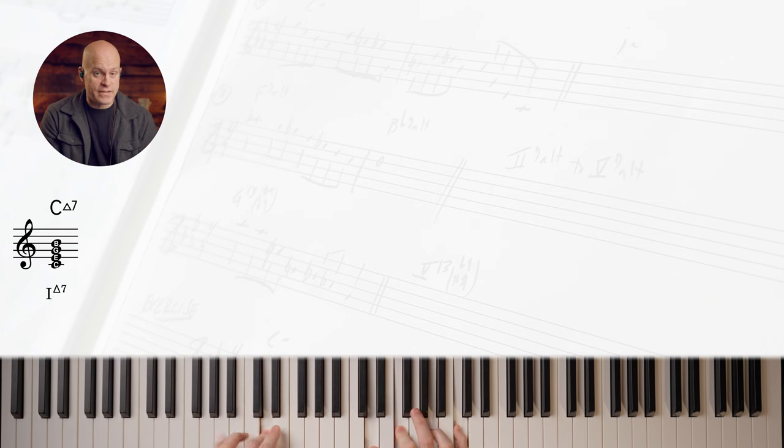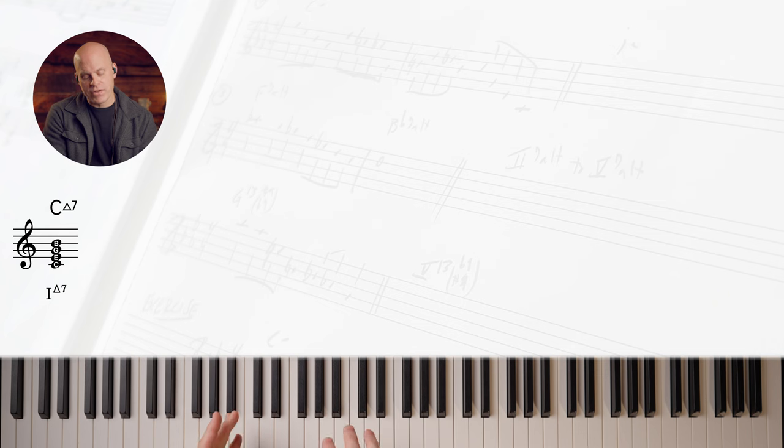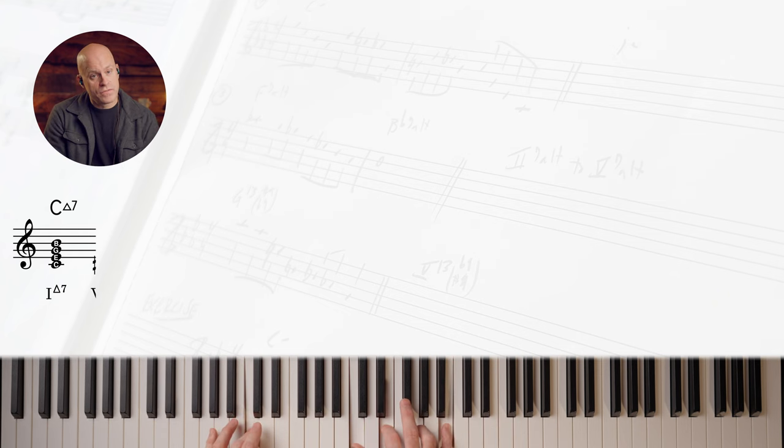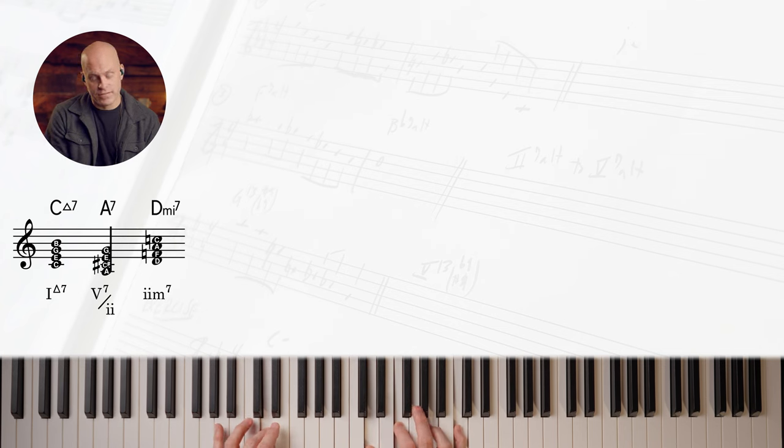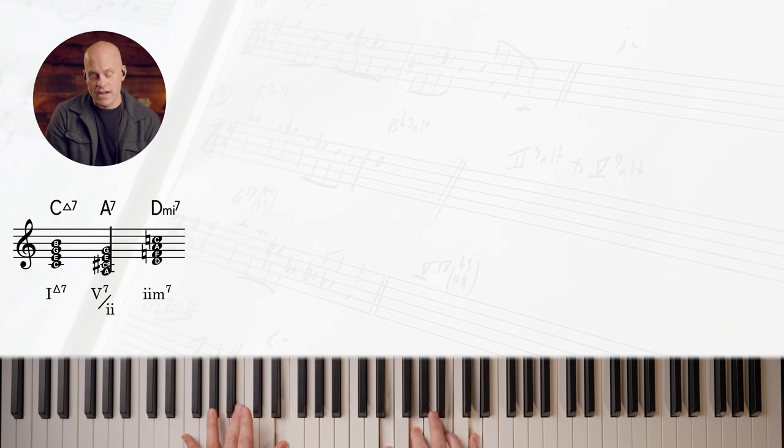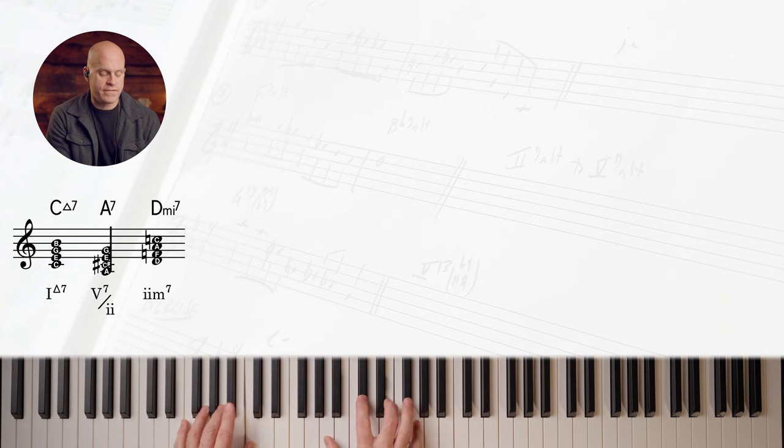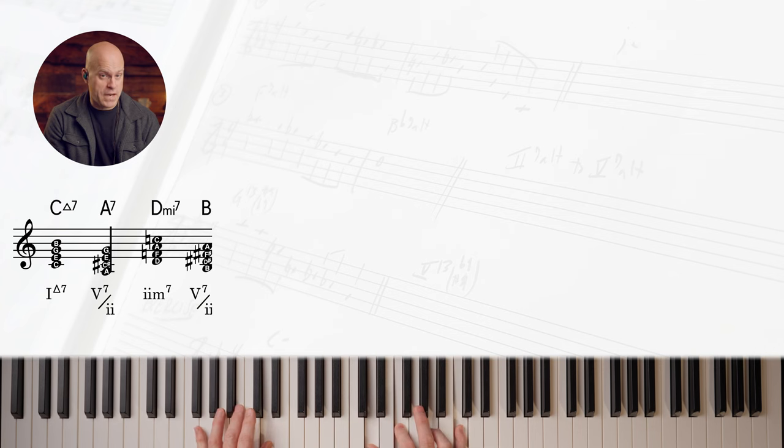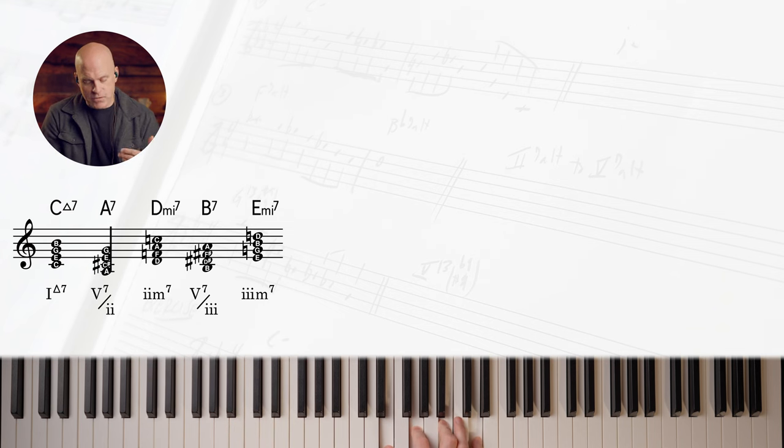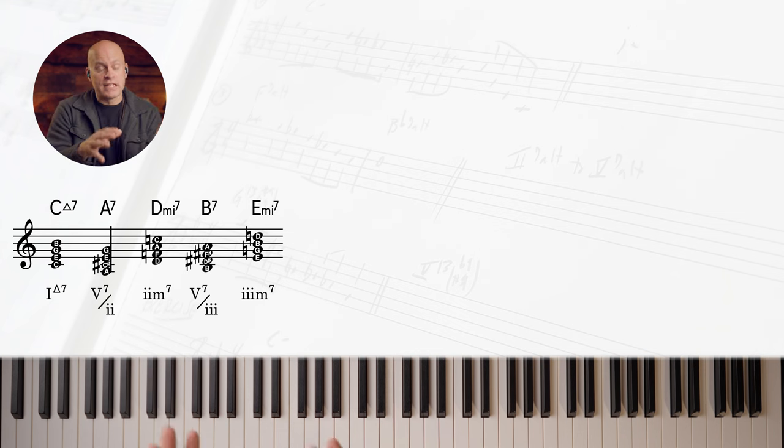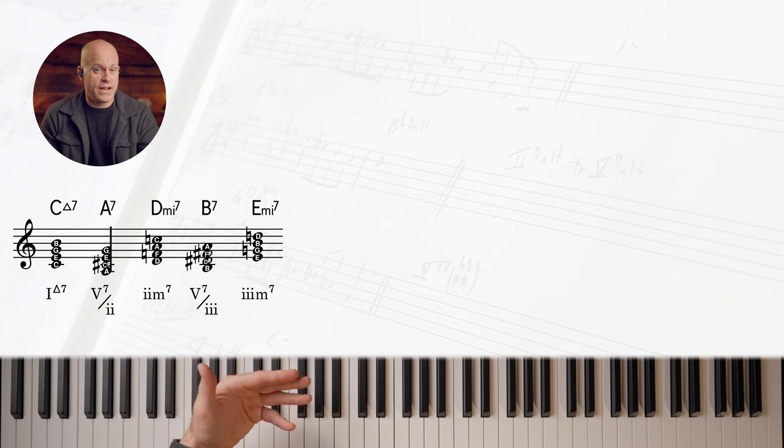Let's check this out in action. C major seven is the tonic. We still think of the same five-one resolution, but now we're thinking of it in relation to the non-tonic chord. D minor seven, the five of D is A, so now we can play a dominant seventh chord to get us to D minor. C major seven, A seven, D minor seven. Next one is E minor seven - the five of E minor is B seven. C major seven, A seven, D minor seven, the five of the three. That's how we think about them - it's the five of something. Always thinking what is this the five of?